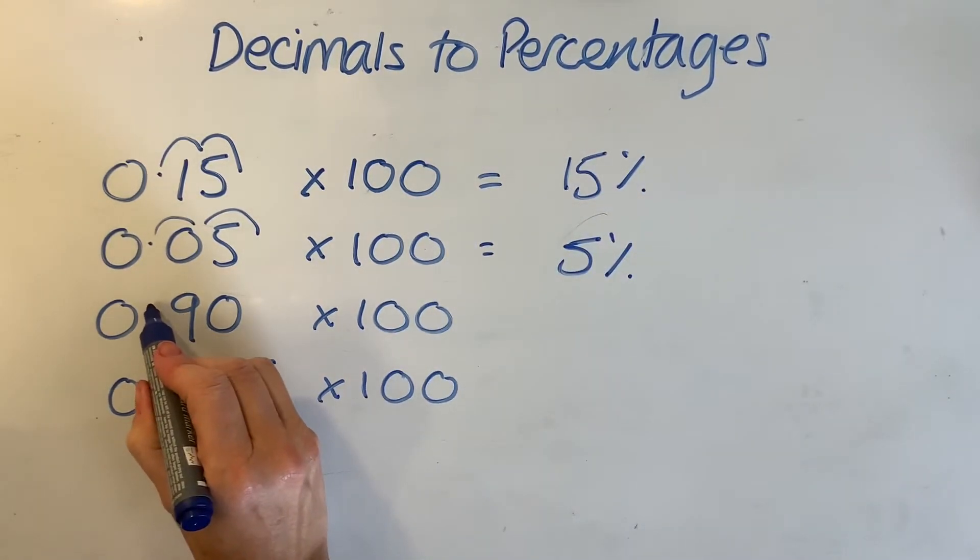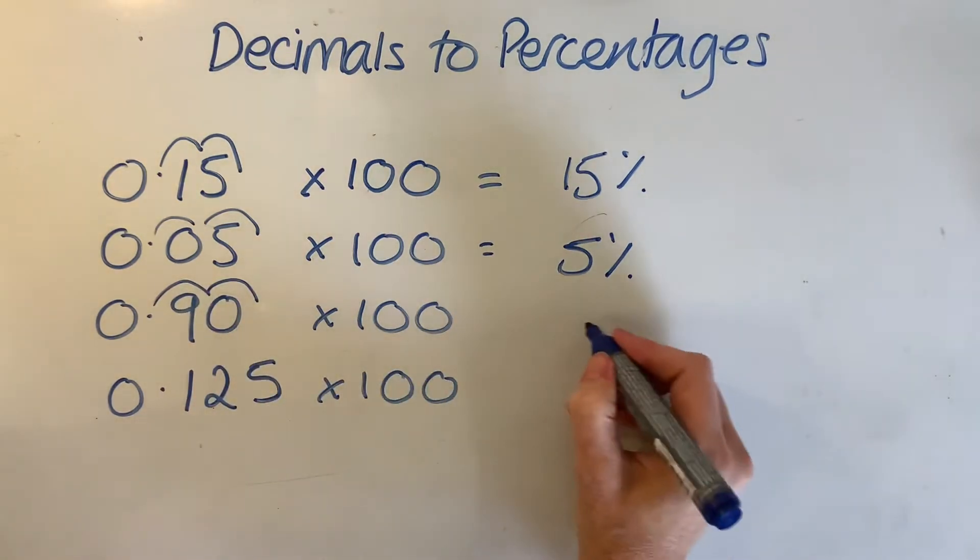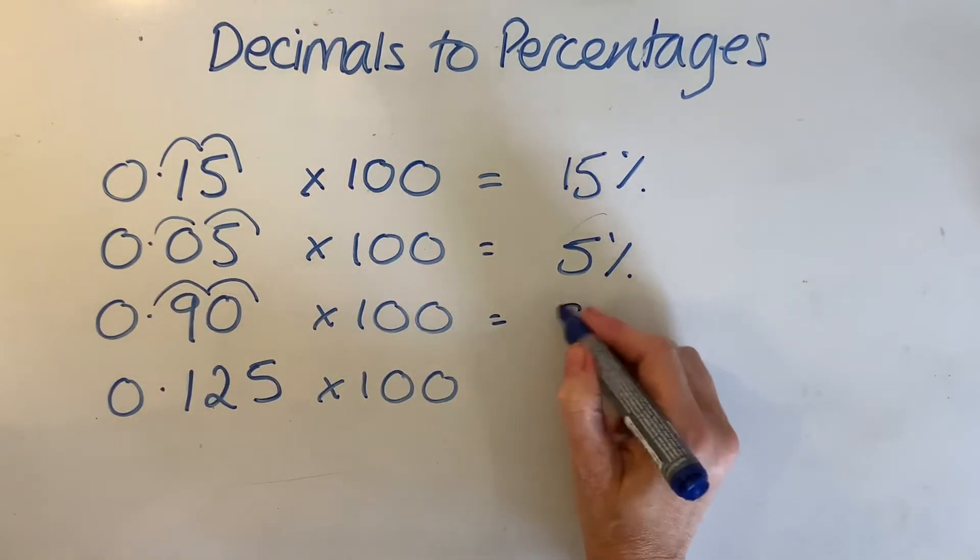Two places from here, 1, 2. You could do it on a calculator if you wanted, I suppose, couldn't you?